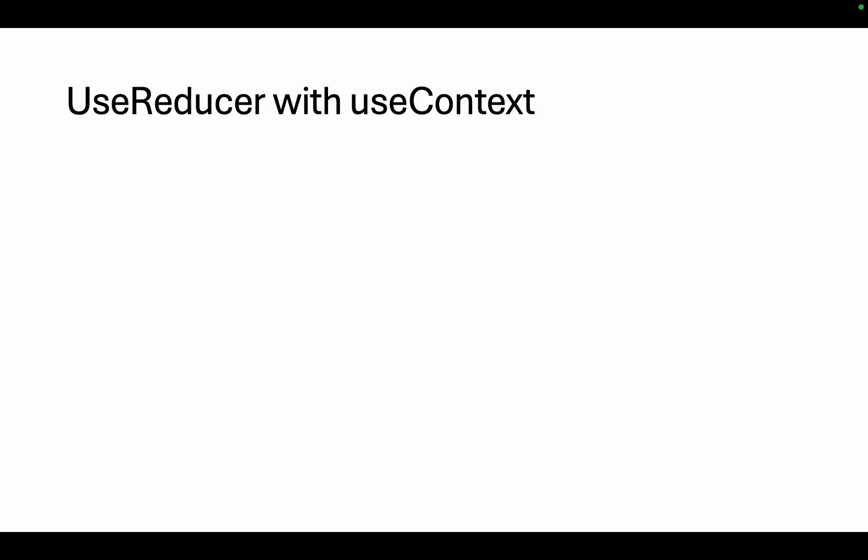Hi guys, welcome back to Future Dimensions 360. In our last tutorial we were learning about the useReducer hook — we had learned the complex state architecture in useReducer hook with the help of a practical example. In today's tutorial we will be learning useReducer hook with useContext hook and we will be implementing that with the help of an example in our code.